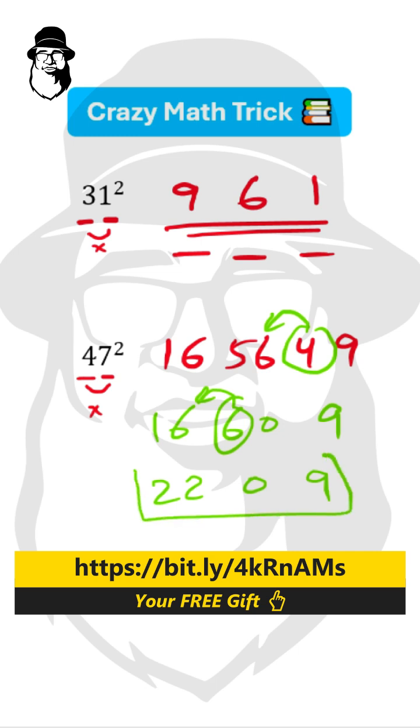So this is our final answer, 2209 for 47 squared. Now you are the master of squaring any 2-digit number. Let's go.